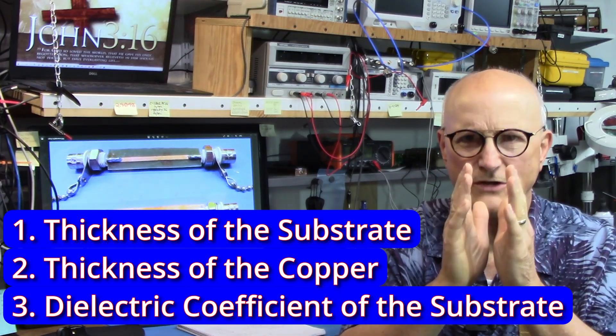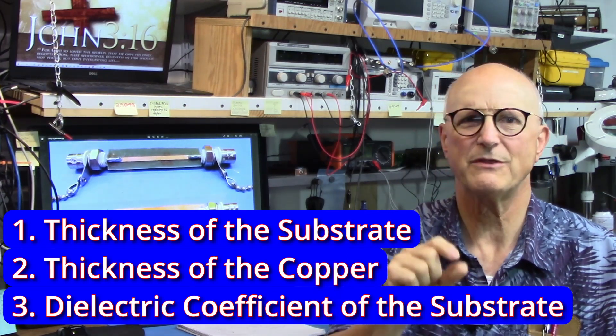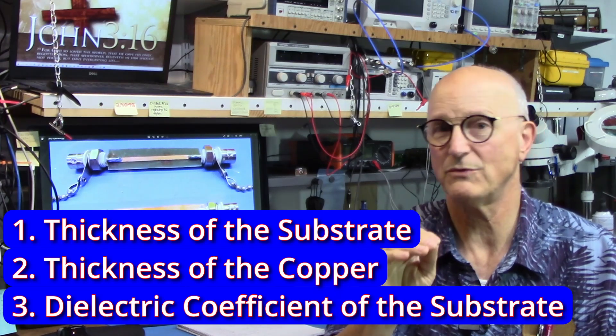You also need to know the dielectric coefficient of the substrate of the board. The width of the trace, along with the thickness and dielectric coefficient of the substrate determine the capacitance associated with the trace. If you have a hunk of PCB material that you want to use for your design and you do not know what these things are, then I suggest that you watch my video on measuring the dielectric coefficient of PCB material. This will walk you through the entire process of gathering this information. I've provided a link to that video up in the corner for you.